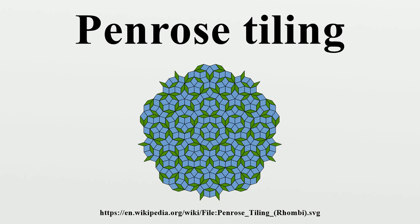The kite may be bisected along its axis of symmetry to form a pair of acute Robinson triangles. The dart is a non-convex quadrilateral whose four interior angles are 36, 72, 36, and 216 degrees. The dart may be bisected along its axis of symmetry to form a pair of obtuse Robinson triangles, which are smaller than the acute triangles. The matching rules can be described in several ways: one approach is to color the vertices and require that adjacent tiles have matching vertices; another is to use a pattern of circular arcs to constrain the placement of tiles.